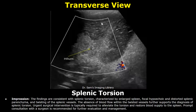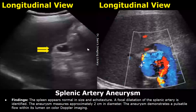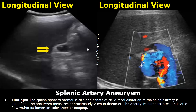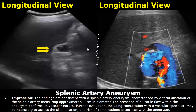Here is a case of splenic artery aneurysm. In the findings, a focal dilatation of the splenic artery is identified and the size of this dilated artery is written. The aneurysm demonstrates pulsatile flow within its lumen on color Doppler imaging. These findings are written in the impression as well, and in the end you can write about further evaluation and clinical correlation.